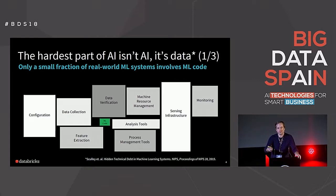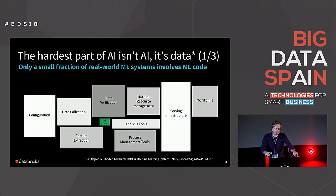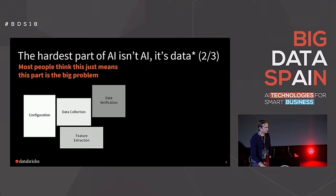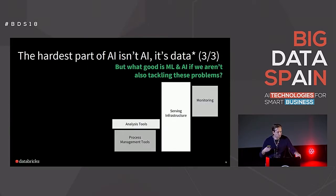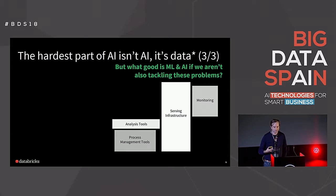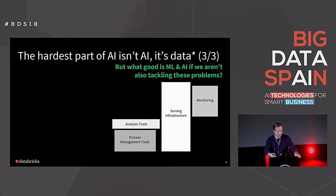It often gets said that the hardest part of AI isn't actually the AI — it's the data. A big part of that is because there are all these other things you need to do, basically from the point of data acquisition to actually deploying models and getting some value out of them. A lot of times people think we're only talking about things on the left-hand side, primarily the data problems. But if you're not doing the things on the right-hand side — in particular, actually getting your models into production, serving up results, monitoring those processes — then there isn't really a lot of point to doing any of it. This is where things like MLflow and other tools are starting to come in, because they can actually help you do these kinds of jobs.